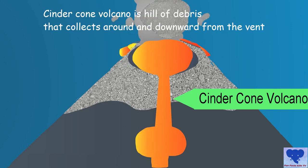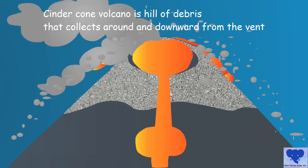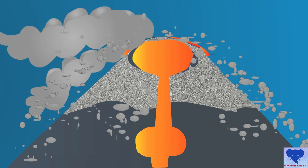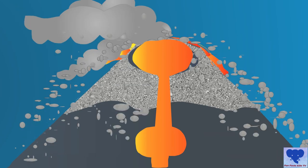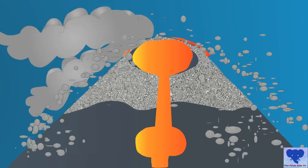Cinder cone volcano doesn't have any horizontal layers and is instead a steep conical hill of volcanic debris that collects around and downward from the vents.